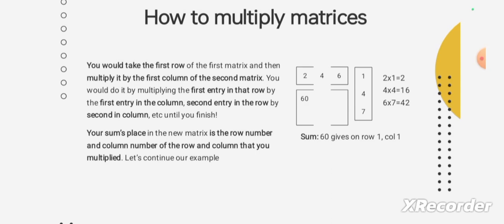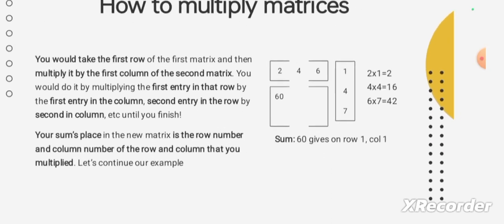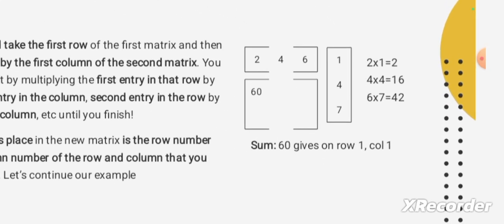Let's continue our example. You see: 2x1 = 2, 4x4 = 16, 6x7 = 42. When we add these three values — 2 plus 16 plus 42 — the answer will be 60. So place that value in the first row, first column.